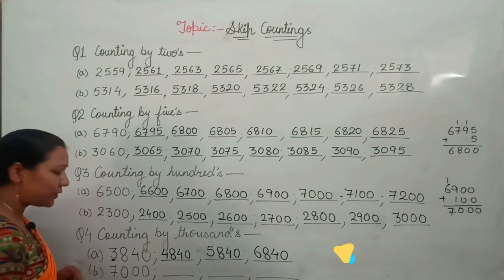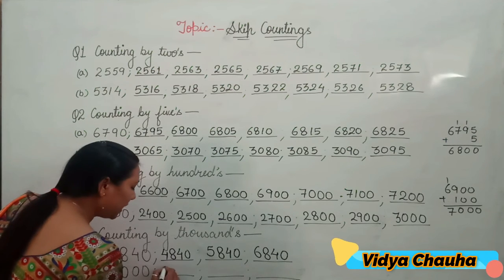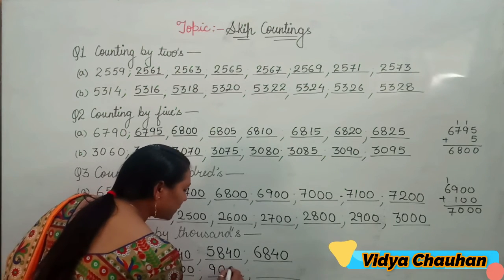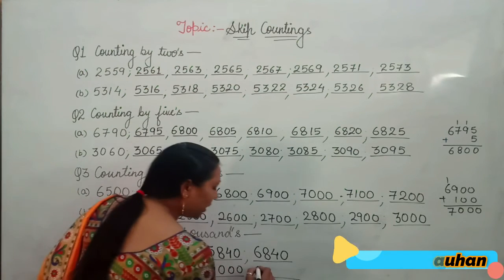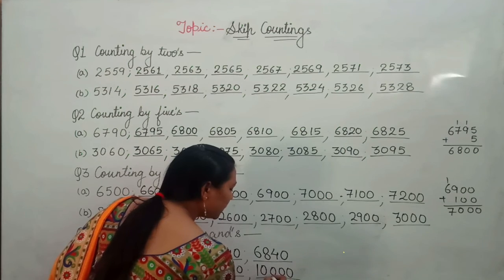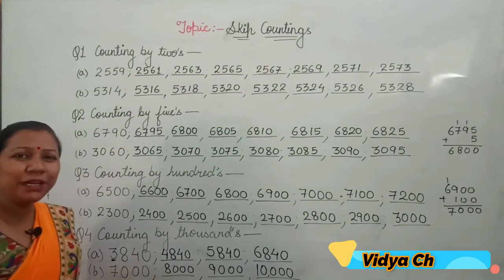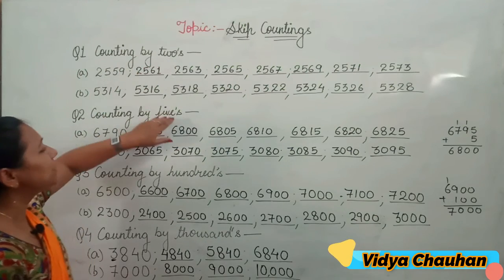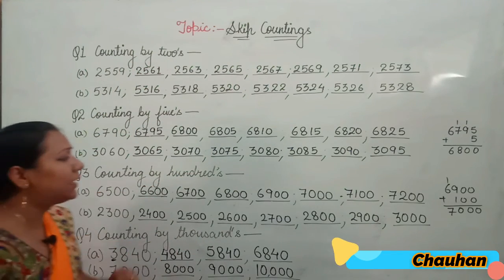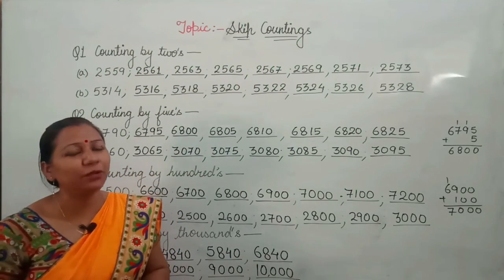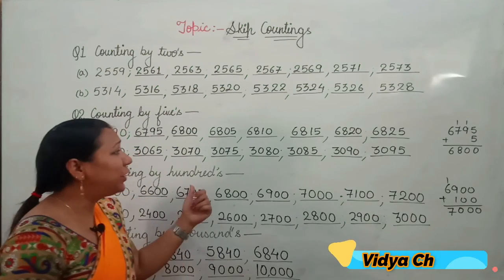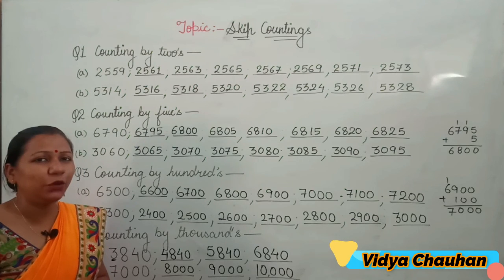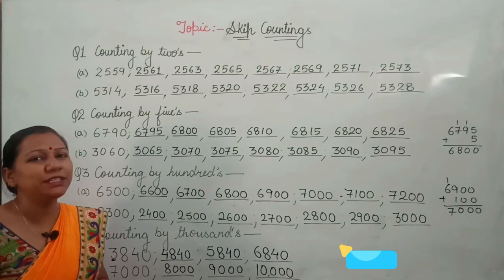So today we have discussed skip counting by 2s, 5s, 100s, and 1000s, and I have solved some of the parts from your given exercise. I hope you have understood this concept. Kindly go through your book exercise and solve the questions in your notebook. Thank you for the lesson, students — have a great day!